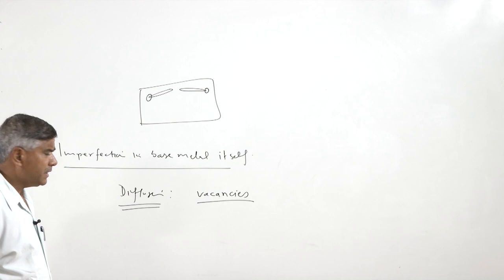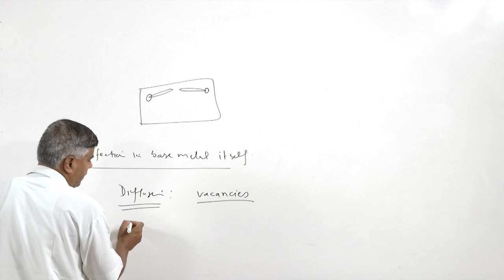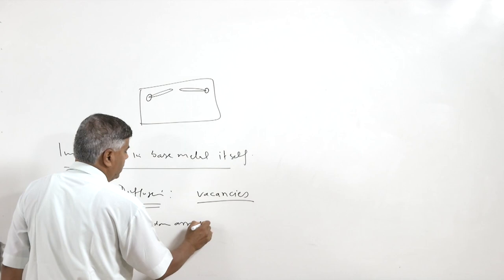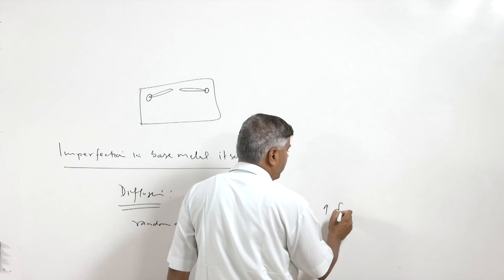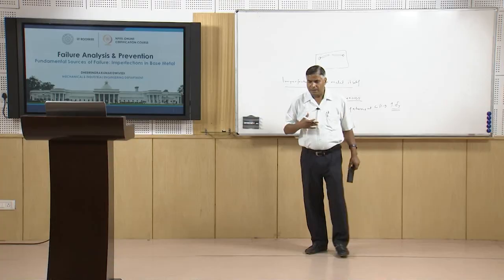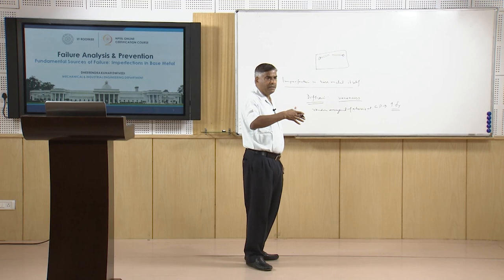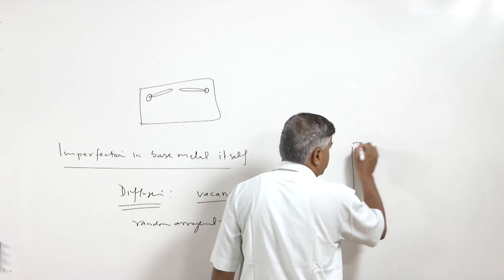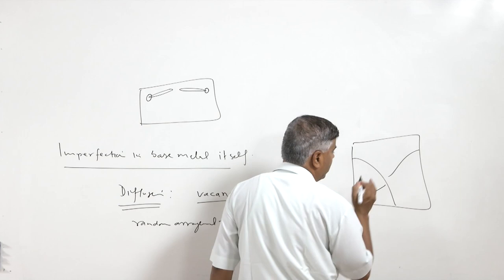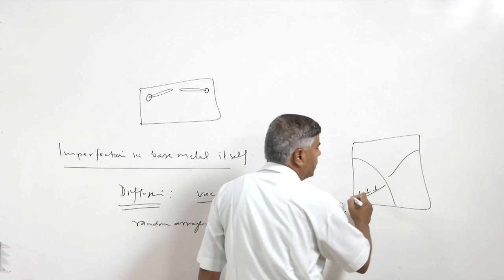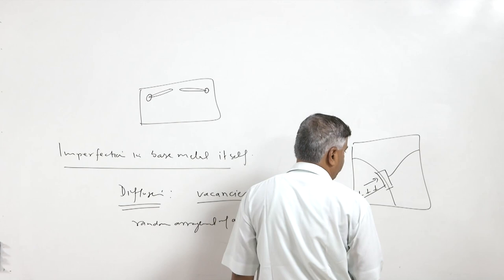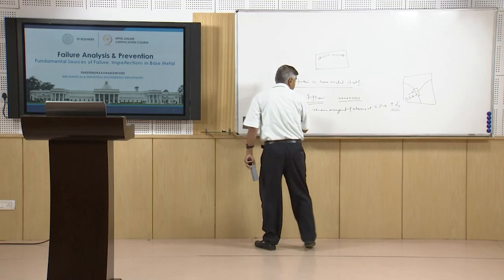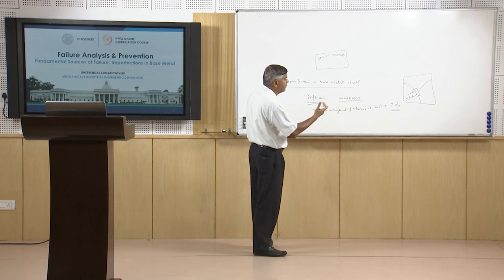The random arrangement of atoms at grain boundaries helps in increasing the yield strength of metals, because wherever there is a disordered arrangement, dislocations cannot cross that zone easily during deformation, thereby increasing the yield resistance and yield strength. For example, if slip is taking place along a plane and dislocations are moving, they will be stopped at the boundary because of the very disordered and random atomic arrangement, so dislocations are not able to cross the grain boundary, improving the strength of the metal.